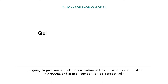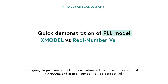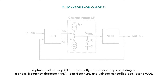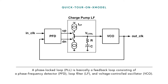I'm going to give you a quick demonstration of two PLL models, each written in X-Model and in Real Number Verilog, respectively. A phase-locked loop, PLL, is basically a feedback loop consisting of a phase frequency detector, PFD, a loop filter, LF, and a voltage-controlled oscillator, VCO.